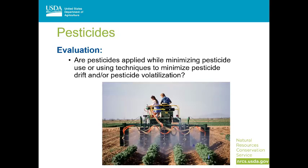Right now we have two air quality resource concern components that are related to chemical pesticide use: spray drift under our particulate matter resource concern, and pesticide volatilization under the ozone precursors resource concern. Our evaluation for both of those components looks at whether any techniques to minimize either spray drift or volatilization are implemented when applying chemical pesticides. If it's determined that a producer needs help in this area, we have a conservation practice standard for implementing a pest management conservation system to either reduce or eliminate the use of chemical pesticides, or apply techniques to reduce spray drift and volatilization.